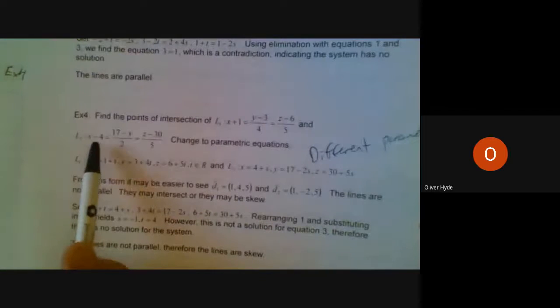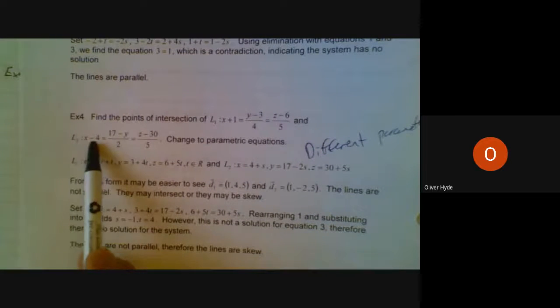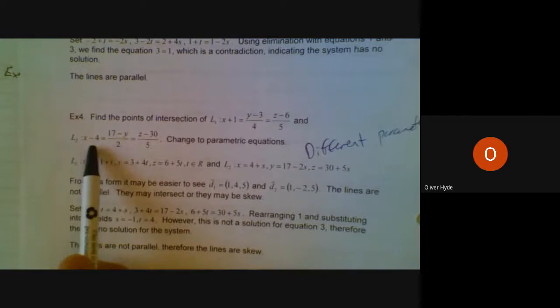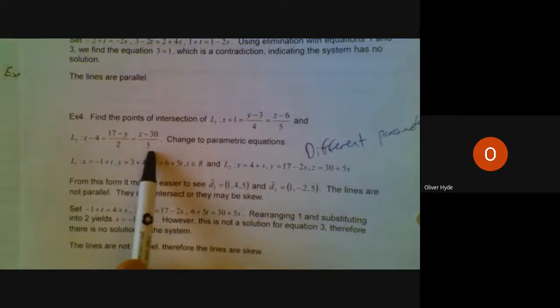But then what I'm going to do accidentally is use the same parameter for line 2. So I'll have x minus 4 divided by 1 equals t. 17 minus y divided by 2 is equal to t. And z minus 30 divided by 5 is equal to t. And I'll rearrange, and I'll get these three parametric equations.